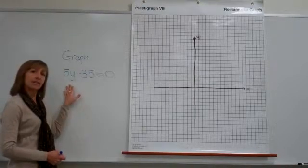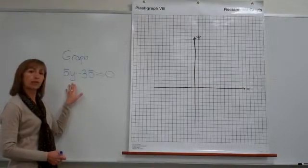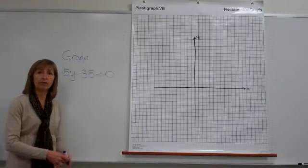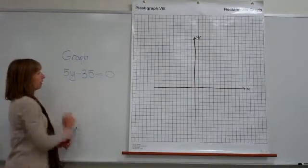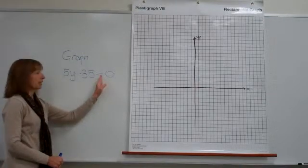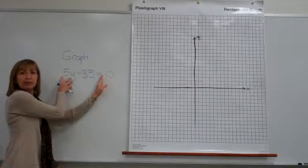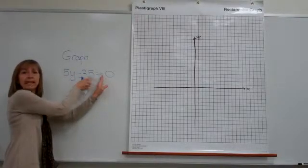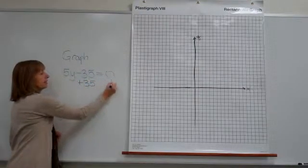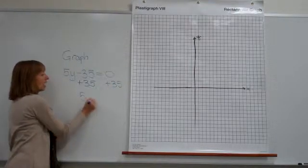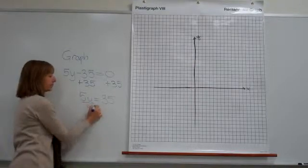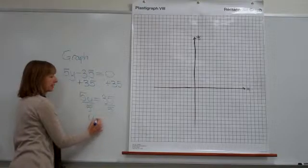In order to graph this, the easiest thing to do when you just have one variable in the equation is to go ahead and solve for that variable. In this equation I have the variable y, and my only term with y is the 5y, so I want to move this minus 35 to the other side. We will add 35 to both sides and get 5y is equal to 35, then divide both sides by 5 and get y is equal to 7.